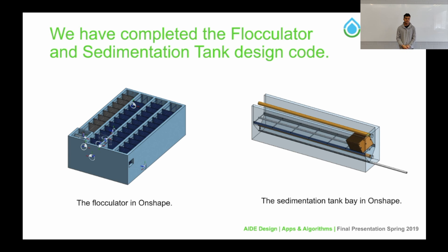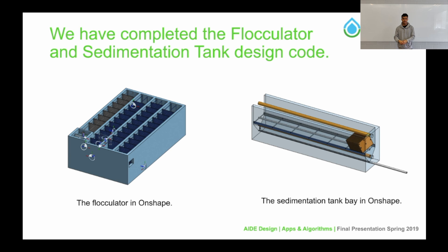We've also improved the readability of the flocculator class. Previously, there were functions with several lines of code to calculate dimensions, which was at times unreadable and a mess to sort through, especially for users not on the design team. We created helper functions and changed the variable names to be more descriptive, so anyone viewing the code can tell which variables correlate to which functions and understand what the variables actually mean.